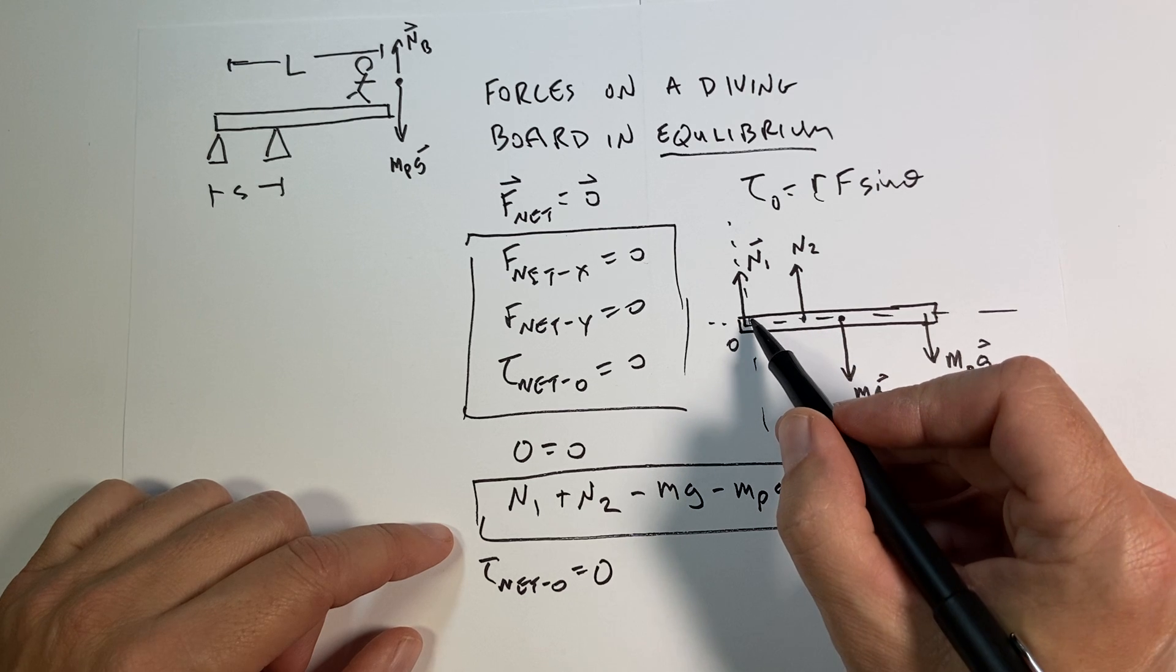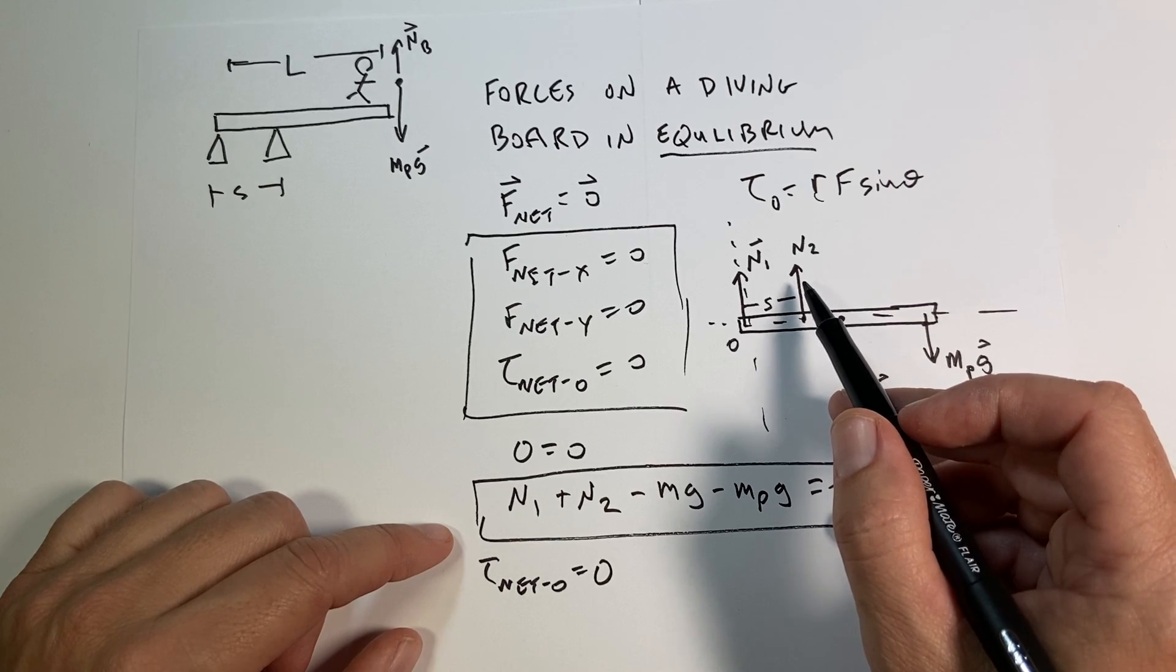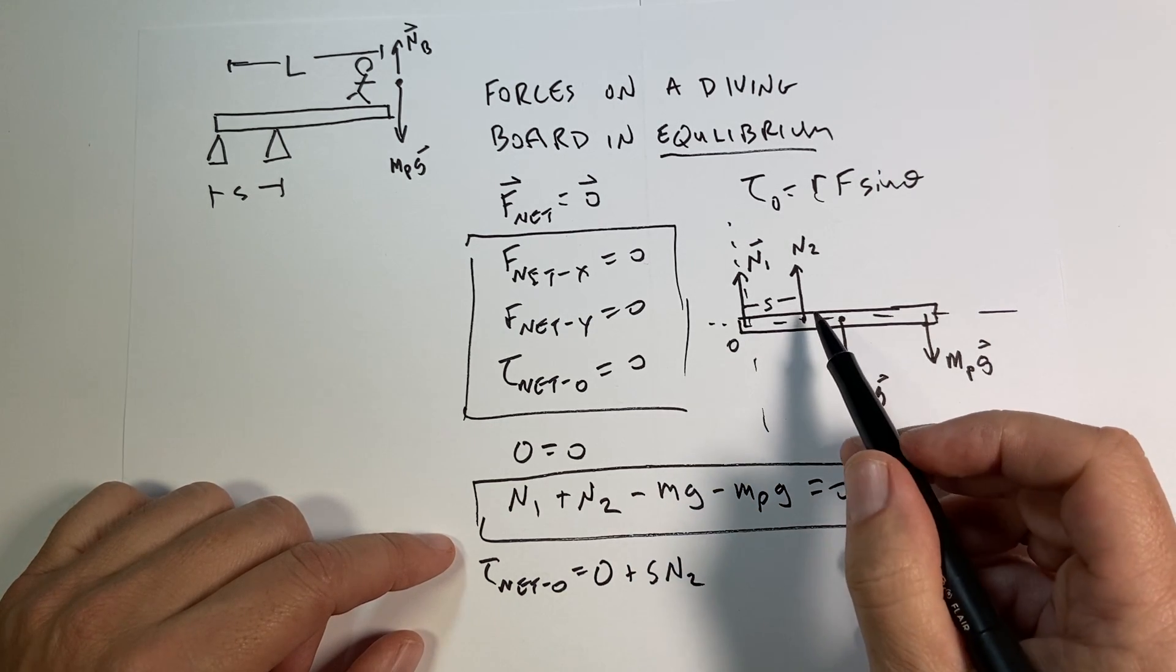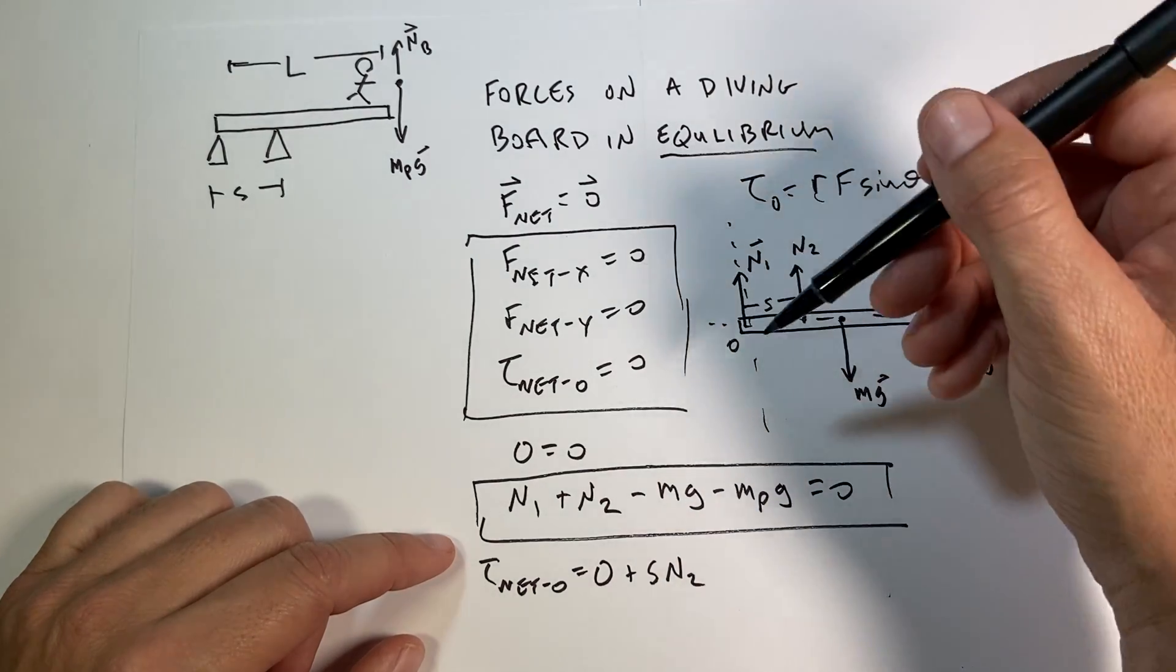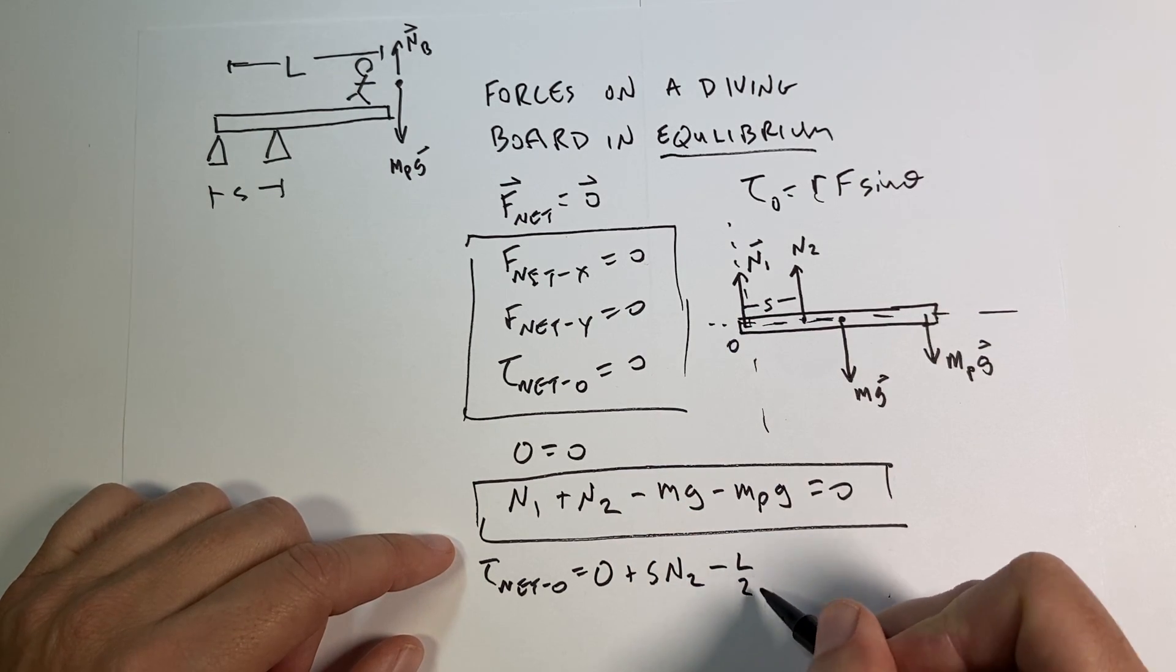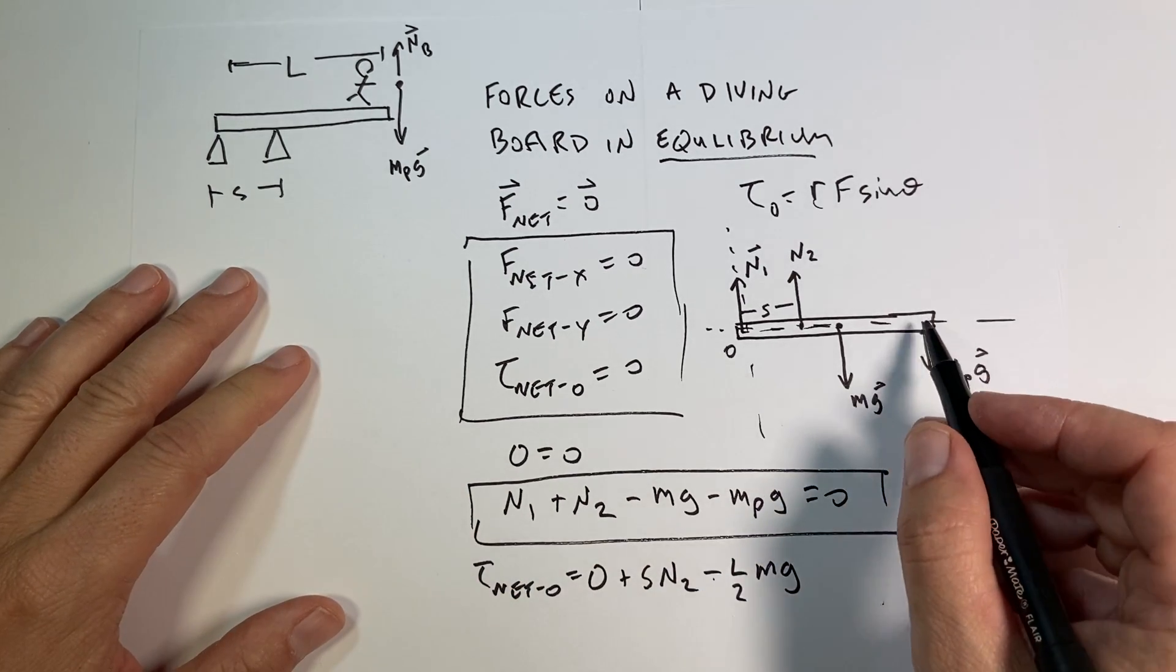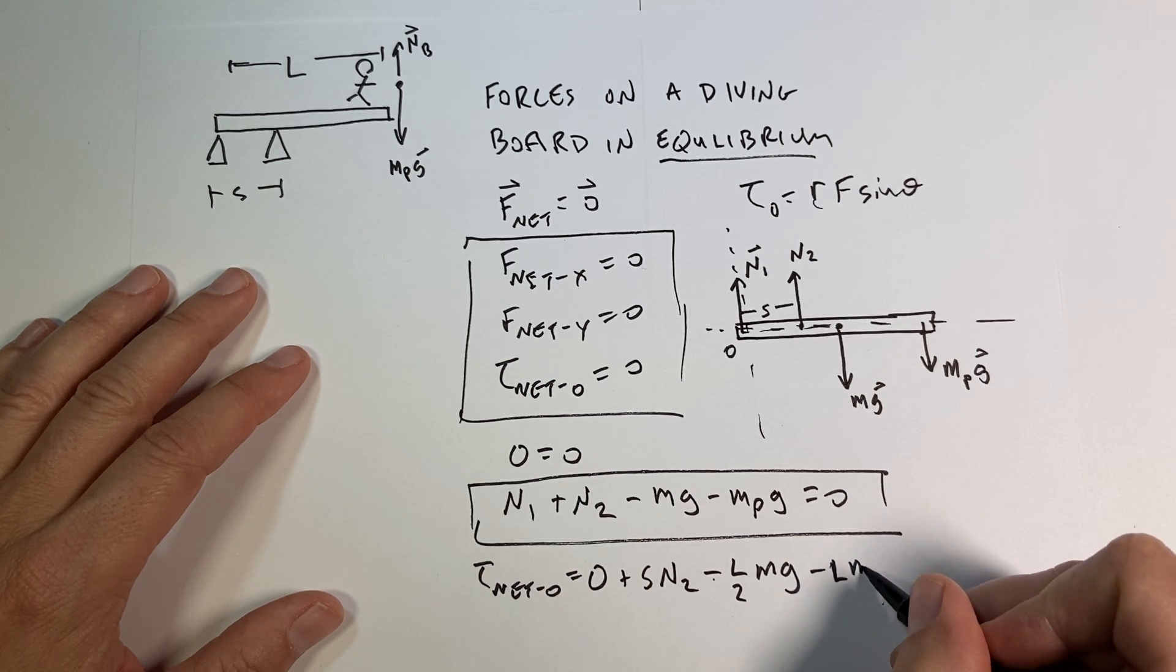Now what about this one? Well, what's the distance from here to there? It's S. And is this going, so I'm going to get a positive or negative torque? Well, it's going, it would want to make it go counterclockwise. So that'd be a positive torque. So I get plus S times N2. Now what about this one? It would want it to make it go in the negative direction, the negative, I mean the clockwise direction, which is negative. And this distance is L over 2. So it's going to be minus L over 2 M G. And these are not vectors because I'm already taking into account the vector direction with these signs here. And then finally, the torque on this one is going to be minus L M P G. And add all this up and get zero.